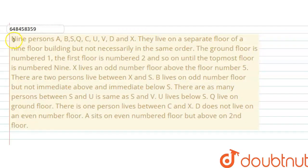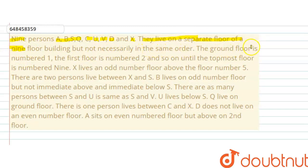Hello everyone, let's solve this problem. The question is given: 9 persons A, B, S, Q, C, U, V, D and X, they live on separate floors of a 9-floor building, but not necessarily in the same order. The ground floor is number 1, the first floor is number 2, and so on until the topmost floor is number 9.